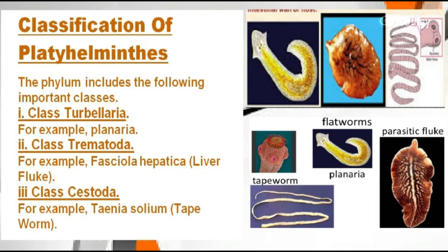Now we will discuss the classification of Phylum Platyhelminthes. Three major classes are present: Class Turbellaria (example: Planaria), Class Trematoda (example: Liver Fluke), and Class Cestoda (example: Tapeworm). These are their scientific names and some examples can be seen here.